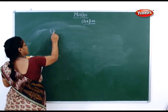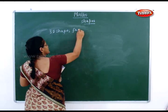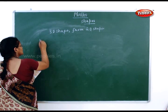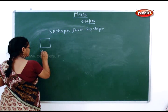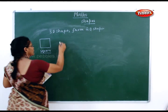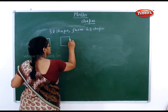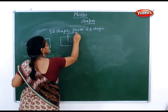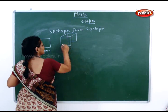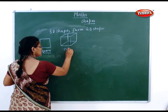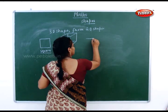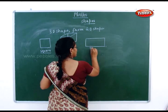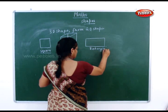Next one is 3D shapes from 2D shapes. You have a square, then you have a cube. Next one, you have a rectangle, you have a rectangle, then you have a cuboid.